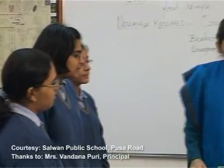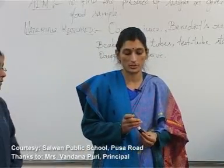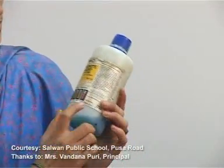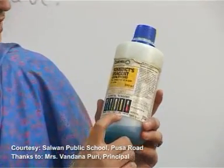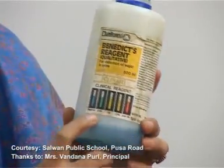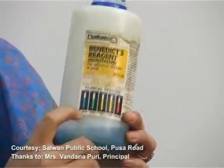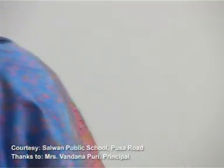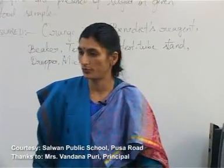Benedict's reagent is a chemical which we use to detect the presence of sugar in a sample. Depending upon the concentration of sugar, there are color variations. Maximum sugar will show red color. If there is less sugar — around 1.5 percent — it will show yellow. If it is above 1 percent, it will show a similar yellow. If it is 0.5 percent, it will show green color. And if there is no sugar, we will get blue color. This reagent, when poured into the test tube, is blue in color. The color changes on heating.